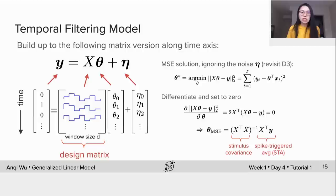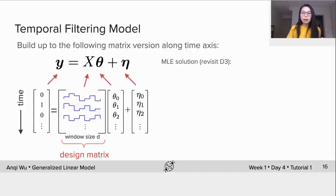Similarly we can use MLE to obtain the optimal θ. Before that, we remind ourselves that each element in the vector η follows the same Gaussian distribution with zero mean and variance equal to σ². Then the log likelihood function is written as this, where T is the number of time points and d is the window size.